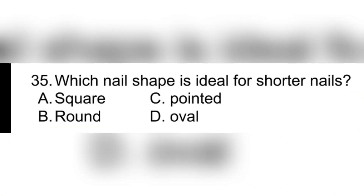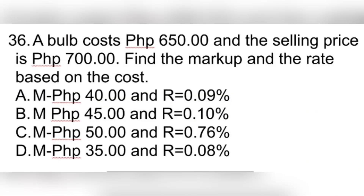Question 35. Which nail shape is ideal for shorter nails? A. Square. B. Round. C. Pointed. D. Oval. Correct answer: B. Round.